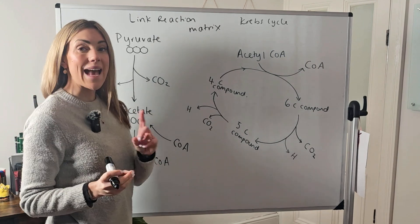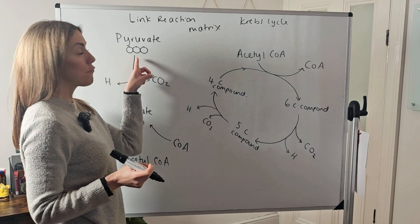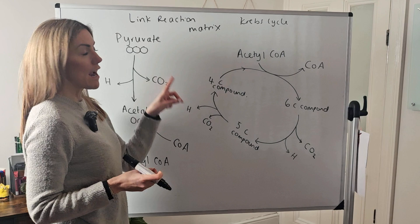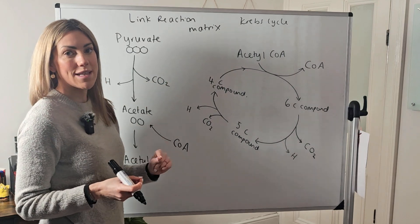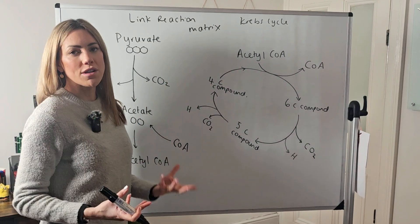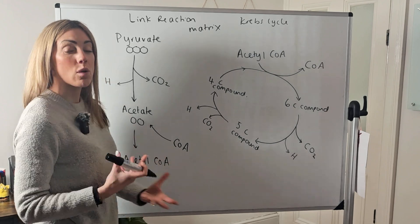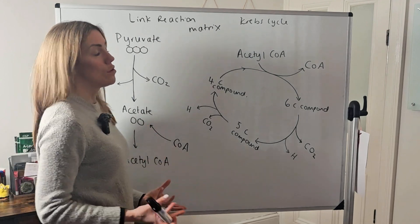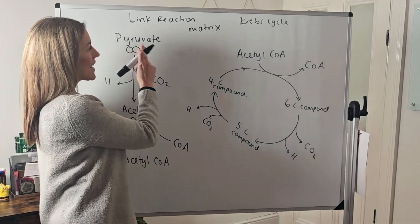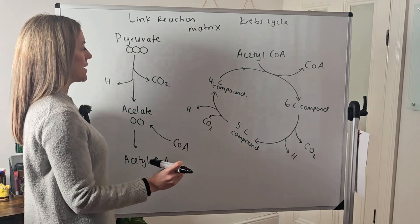At the end of glycolysis we'd made two molecules of a three-carbon compound called pyruvate. That pyruvate is going to be actively transported into the mitochondria across the mitochondrial membrane. It's active transport, so it requires energy from ATP and also requires a carrier protein, but we're going to actively transport pyruvate into the matrix of the mitochondria.